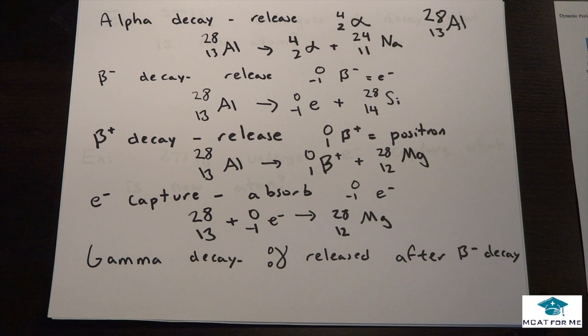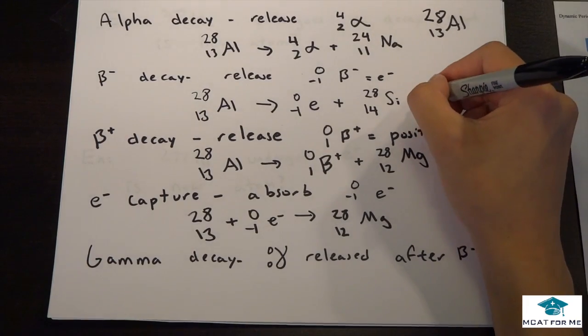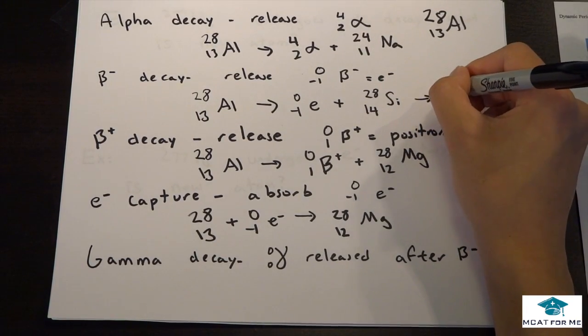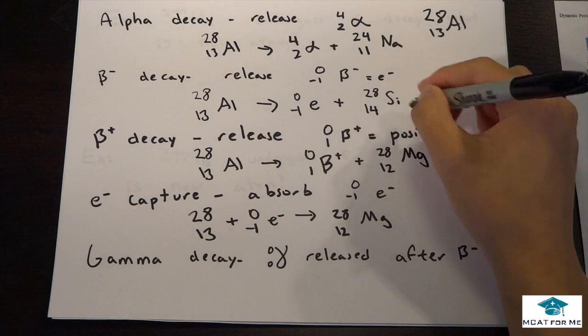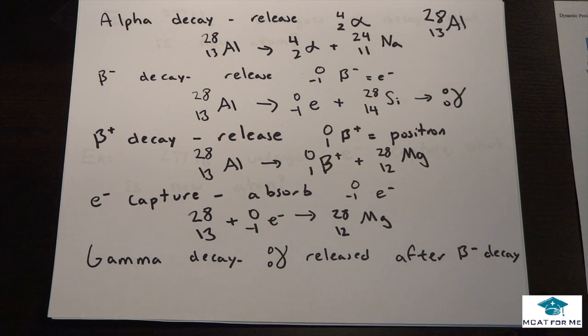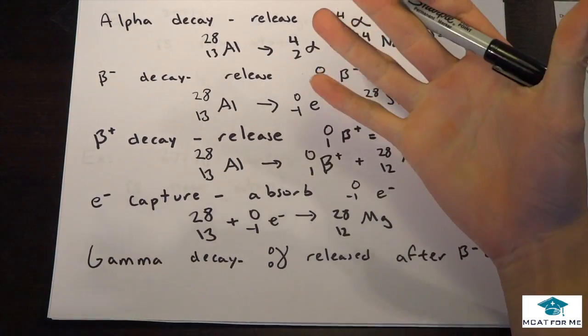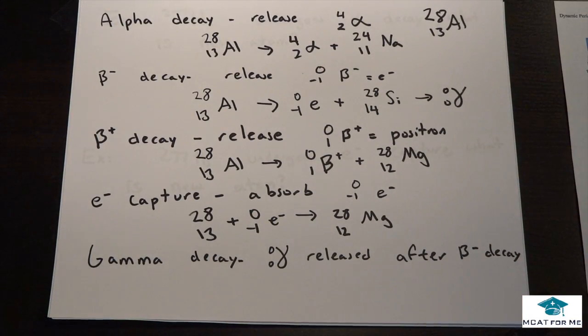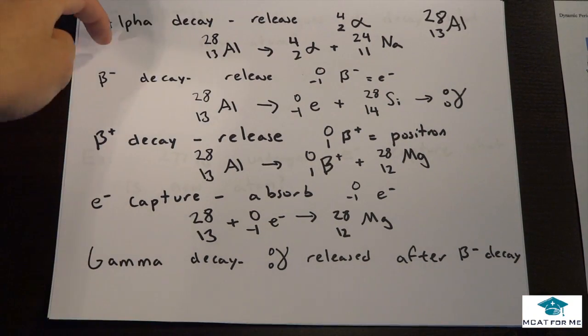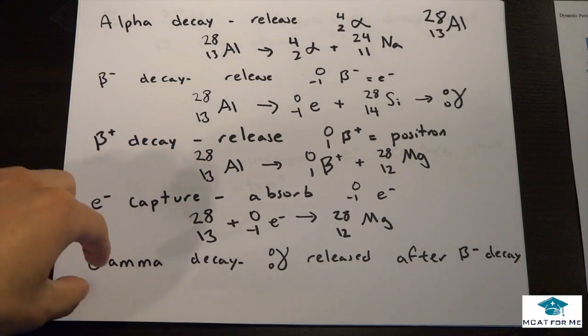So gamma decay is kind of weird. Gamma decay, we release this massless, chargeless gamma particle. And it's released after we get a beta decay. So for example here, we could get a release of this gamma particle, but you don't always get it. So just know that gamma particle has no mass, has no charge, no protons, no neutrons, no electrons. But another thing to note is that alpha decay is very, very weak. Gamma decay is very, very strong. Gamma decay can burn a hole through your skin. Alpha decay, you can probably stop with a piece of paper. And same thing with, so alpha, then comes beta, then gamma in strength.